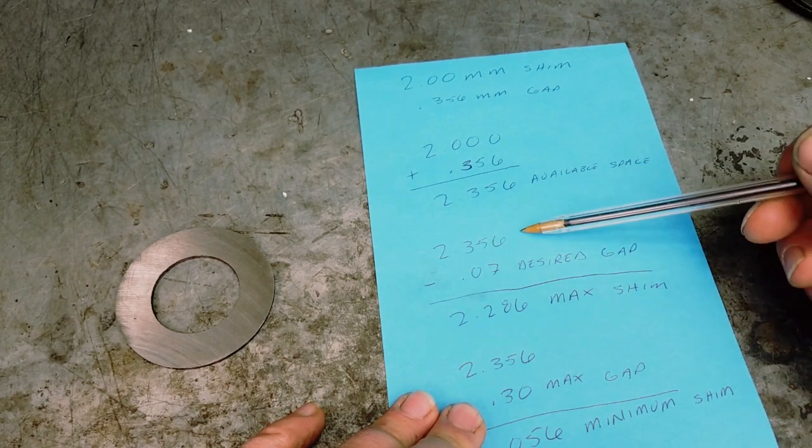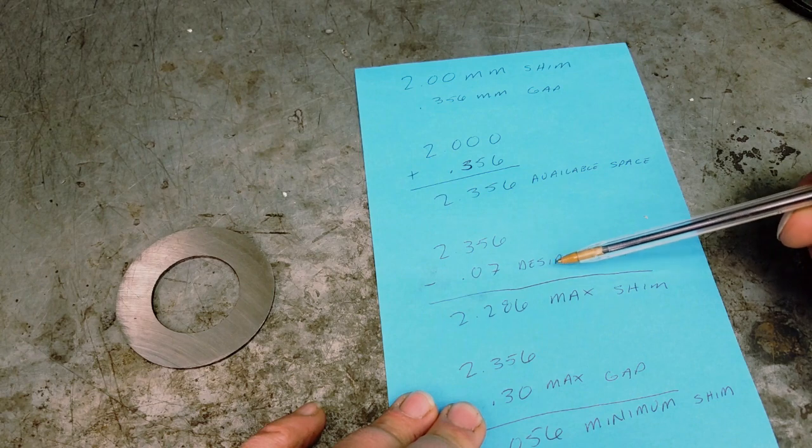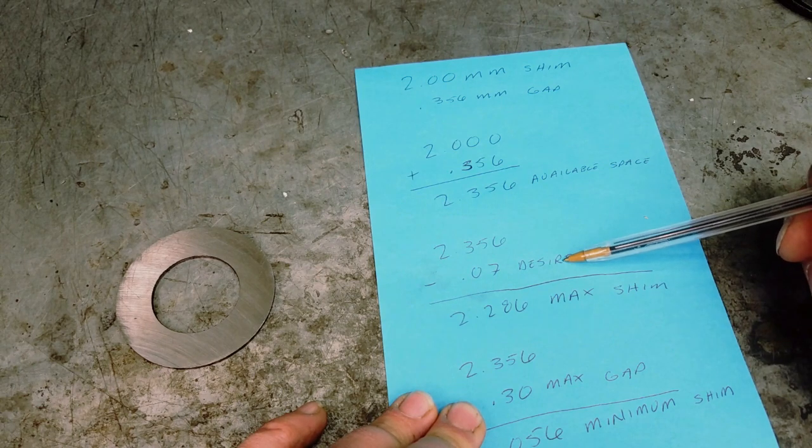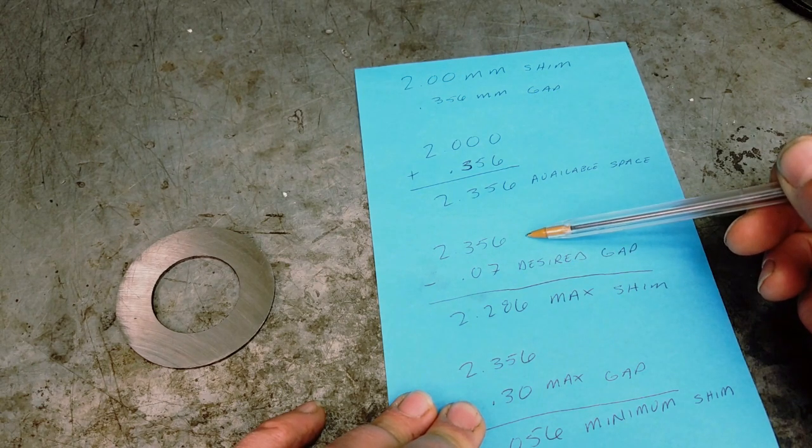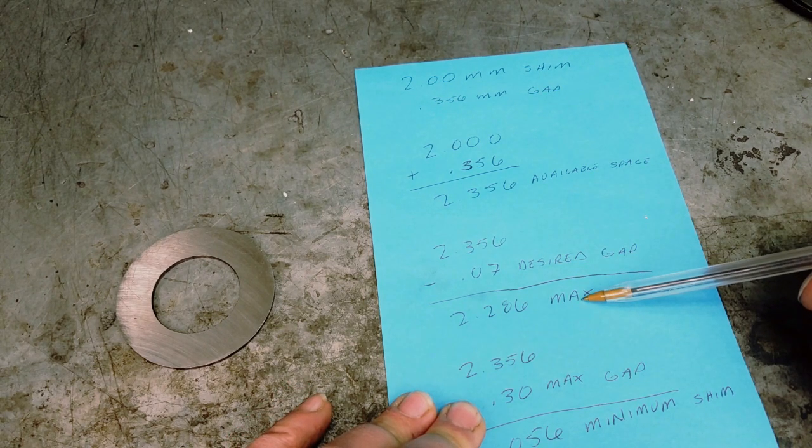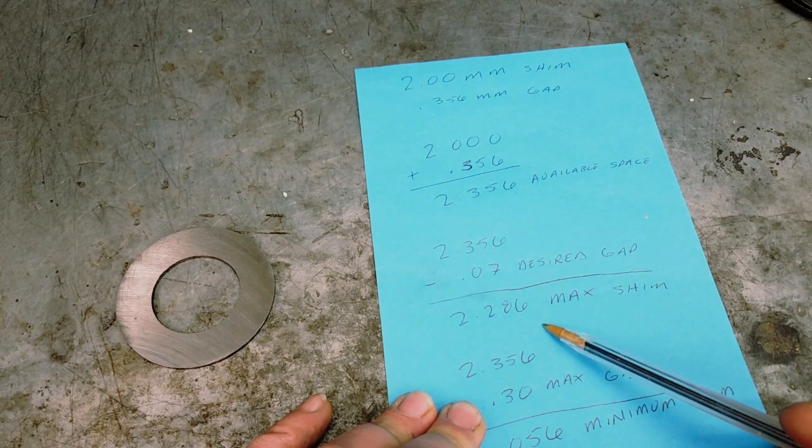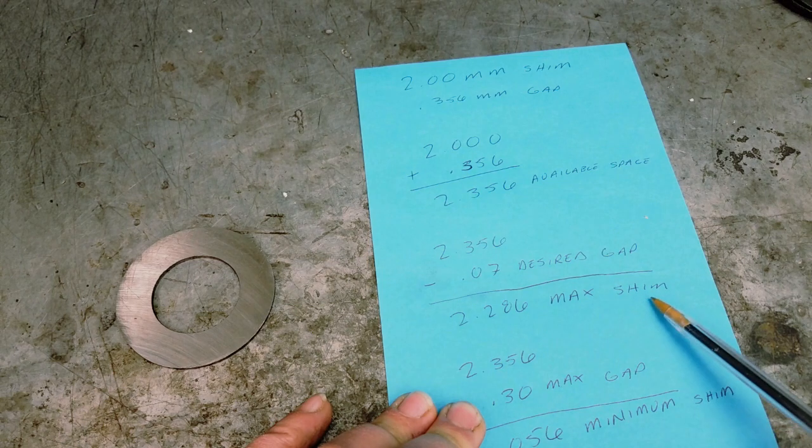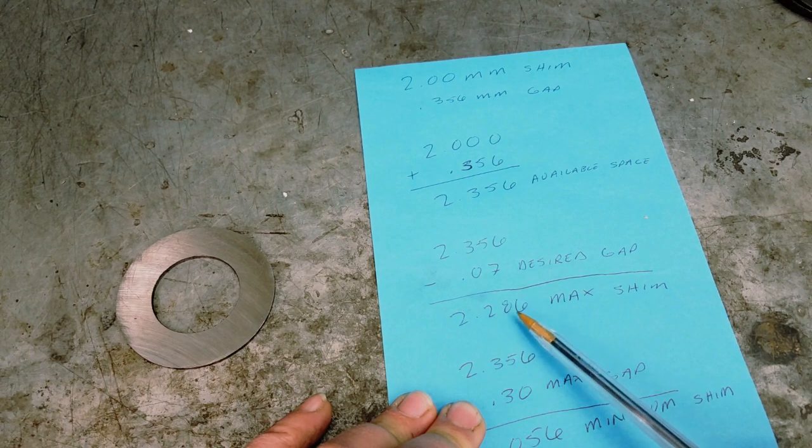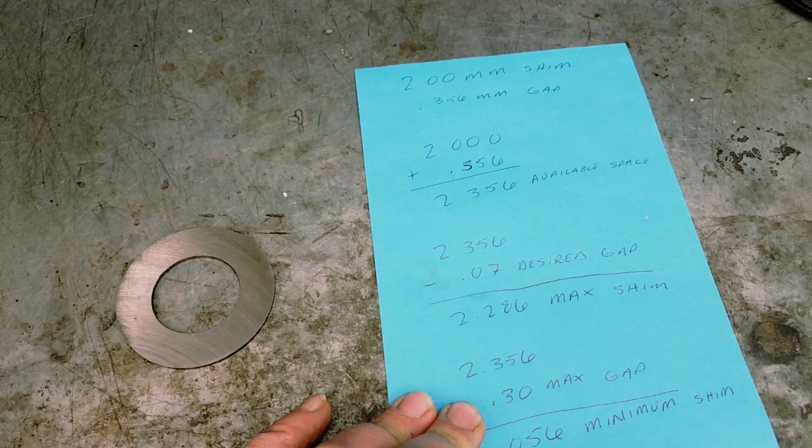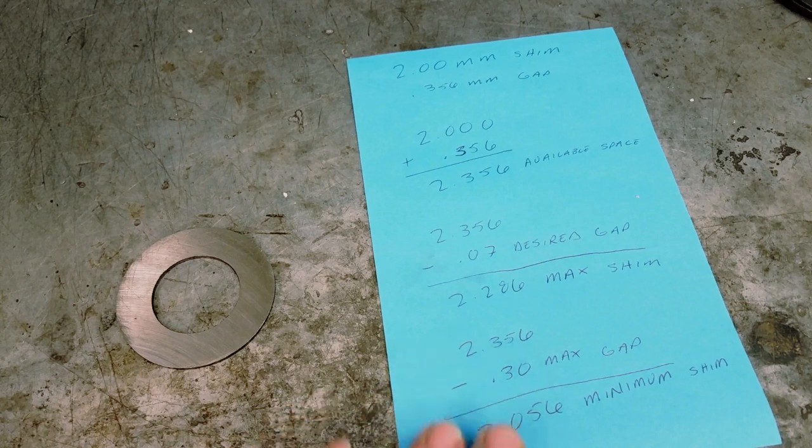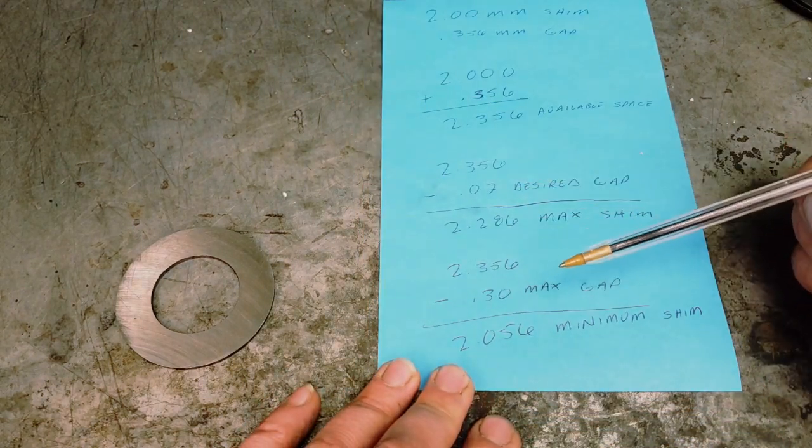Then you take your total available space—and as I said before, you want to try to get it towards the tightest end of the spectrum, which for a standard four-speed gearbox is going to be 0.07. So you're going to take 2.356, your total available space, minus the desired gap, and that number you're going to get from that demonstration is 2.286. That is the maximum size shim you can put in there. If you were to get anything bigger than that, it's going to be too tight and you will not be able to get your 0.07 feeler gauge in there, and you're going to have premature wear in your gearbox components.